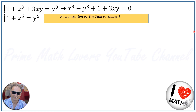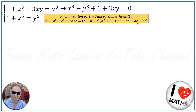This identity states that a cubed plus b cubed plus c cubed minus 3abc is equal to (a plus b plus c) times (a squared plus b squared plus c squared minus ab minus ac minus bc). I have another video that proves this identity — I will put the link in the description.